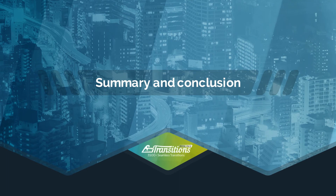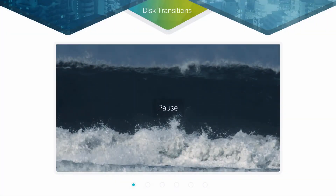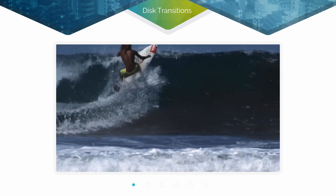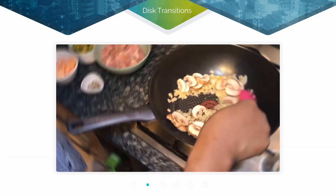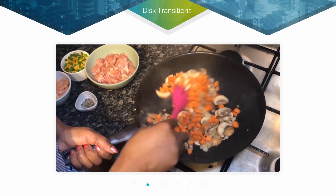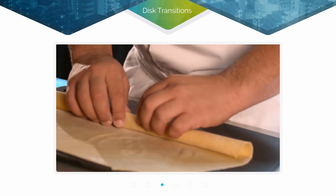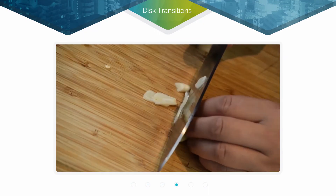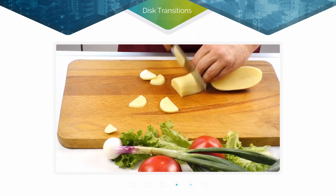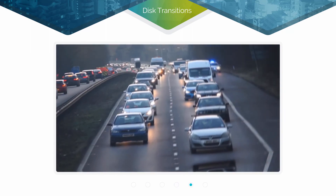Just by applying the disc transition we can show the viewer a quick passage of time between two sequential scenes. The disc transition can be used in many other situations where you want the viewer to follow along as different action takes place. Another good use is in cooking or recipe videos, where you can show the different stages of a recipe by applying the disc transition.